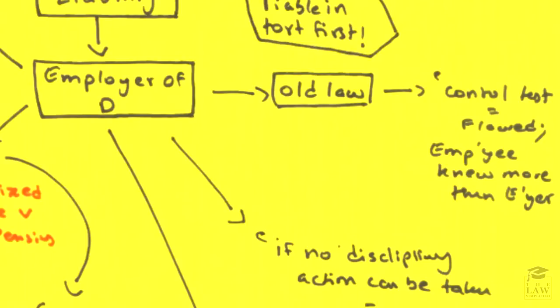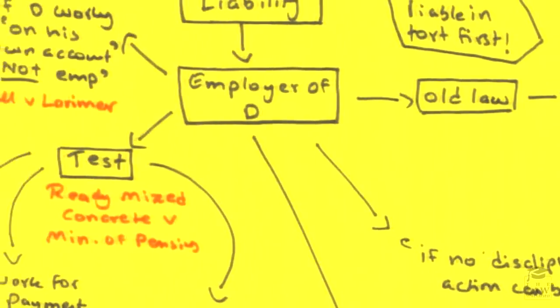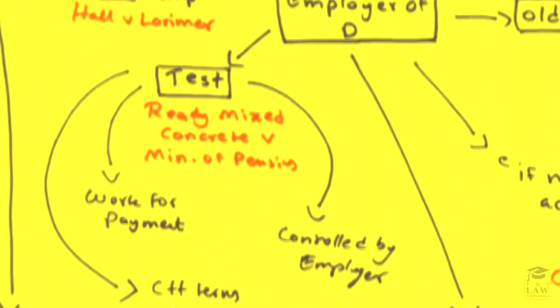However, with the progression of time this was felt to be quite flawed. For instance, take an IT technician or IT manager in a contemporary company — he or she might have more knowledge about what they are doing in relation to their subject matter than their employer. So it was felt flawed because the employee knew more than the employer in some occasions, and the aspect of control was loosely based.